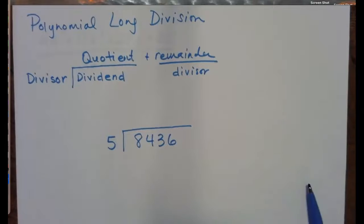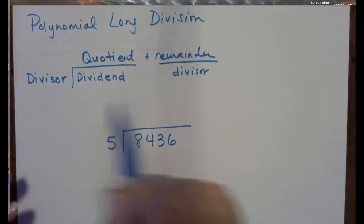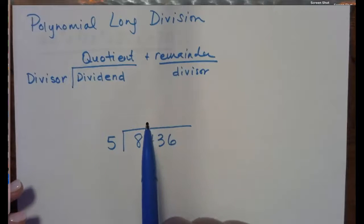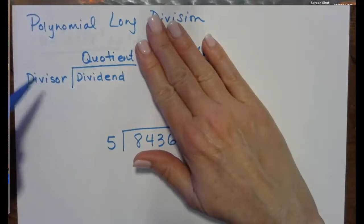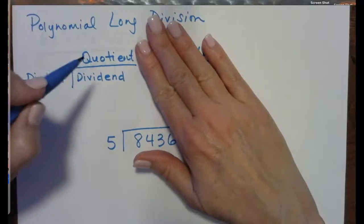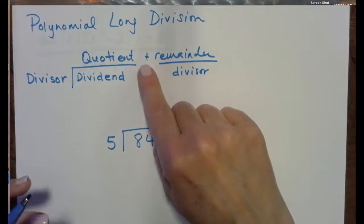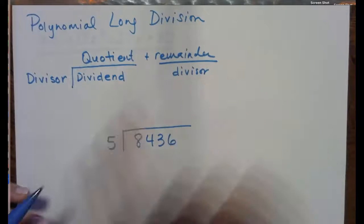Hi friends, we're going to be looking at polynomial long division in this video. So on this very first page, I've just got a reminder of some of our vocab here. When we are dividing, we have the dividend under the house, the divisor is what we're dividing by, and then we get the quotient plus the remainder out of the divisor.